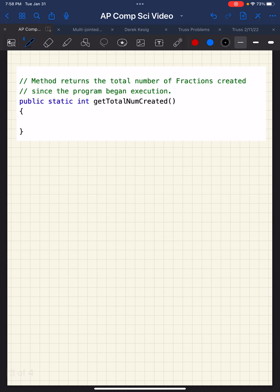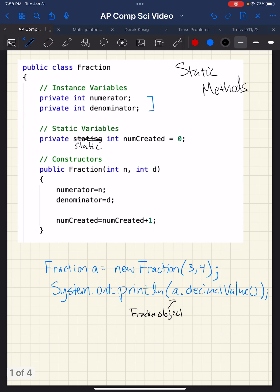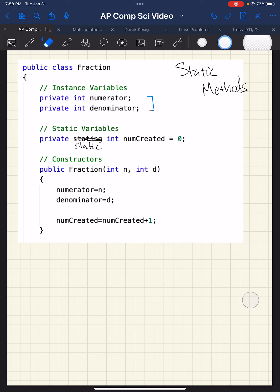Or getTotalNumCreated would be a static method that would return the value of the num created to let you know how many total fractions have been created. So let's look at this here.